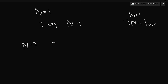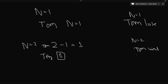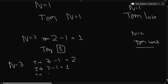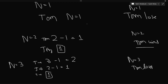For n=2: Tom plays 2−1=1, Jerry gets 1 and loses, so Tom wins. For n=3: Tom plays 3−1=2 (the only option), Jerry plays 2−1=1, Tom gets 1 and cannot move, so Tom loses. For n=4: Tom plays 4−1=3, Jerry plays 3−1=2, Tom plays 2−1=1, Jerry gets 1 and loses, so Tom wins.